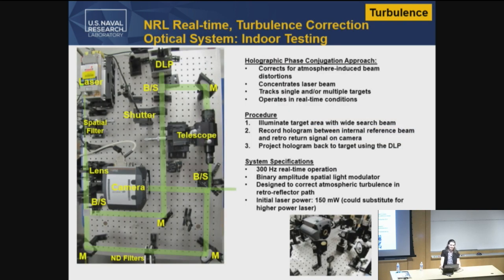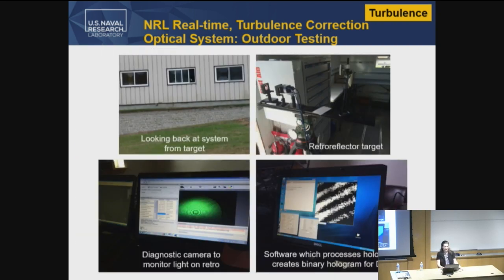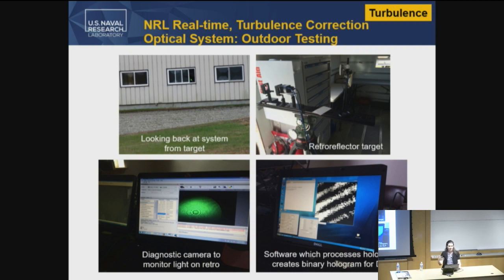At NRL, we have designed real-time turbulence-corrected systems. We use beam splitters to split the laser into two paths, send light to the target — in this setup using a digital light projector, which is an amplitude-only device, for phase correction — and a second beam acts as the reference. We record these on a camera and run this in a real-time loop. We've taken this on field tests outdoors. We use a retro-reflector target, and in real-time we correct for the turbulence. The fringes projected on the digital light projector move based on the turbulence in the atmosphere.